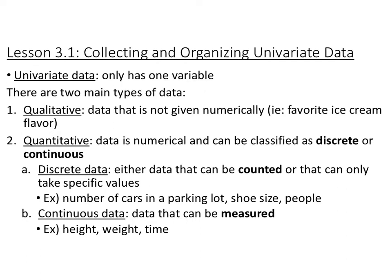Univariate data is one-variable data — uni means one. There are two main types. Qualitative data is data that's not given numerically; it's descriptive — like your favorite ice cream flavor, political affiliation, or religion. Those are qualities, so that's qualitative data. What we're going to be looking at is quantitative data — quantity means numbers, so these are numerical. Quantitative data can be classified in two ways: either discrete or continuous.